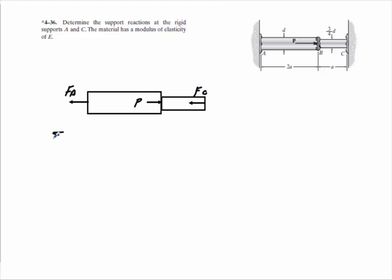So basically, if you sum the forces in the x direction, you've got to equal to 0. You'll have this P value here minus FA minus FC is going to equal to 0.